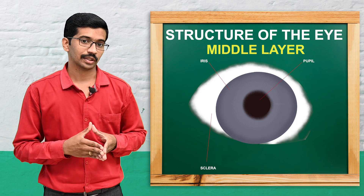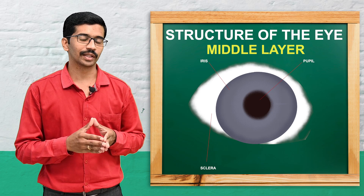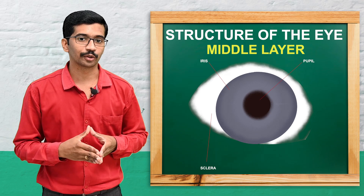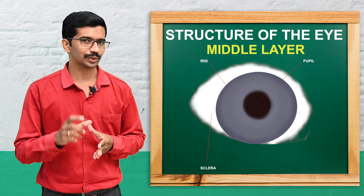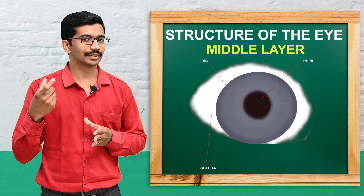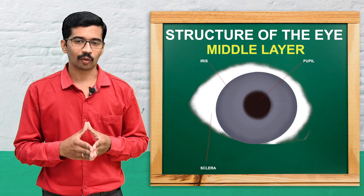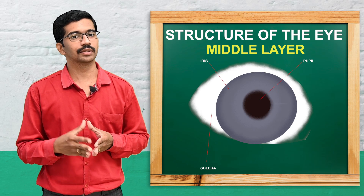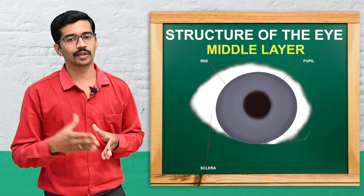The iris is an extension from the ciliary body and is the colored visible part of our eye. The iris is usually brown in color, though depending on genetic factors it may be silver or blue. At the center of the iris there is an aperture called the pupil, through which light rays enter the eyeball and fall on the lens.